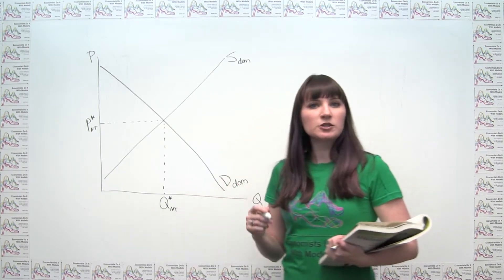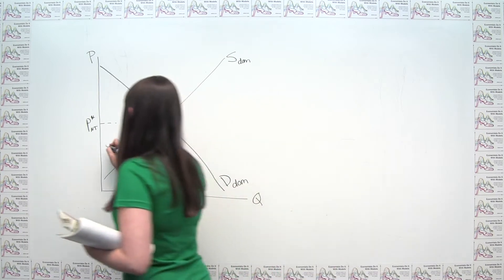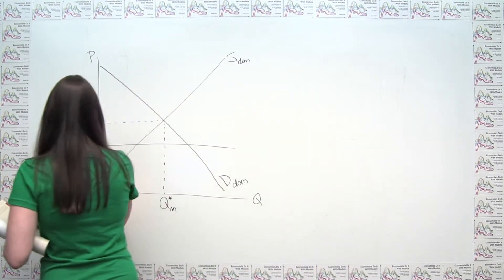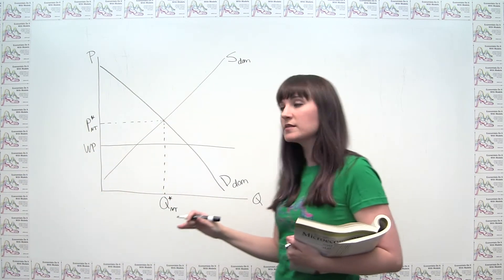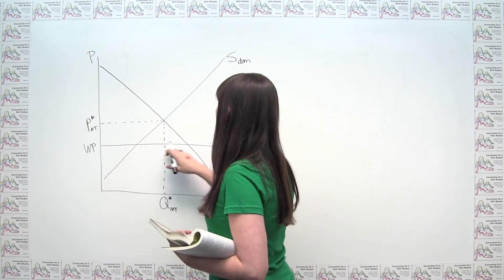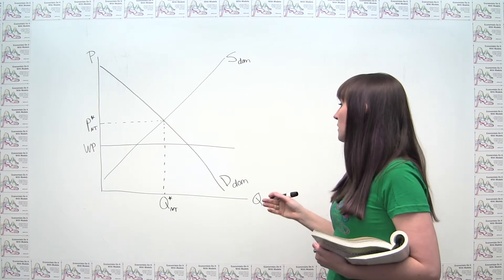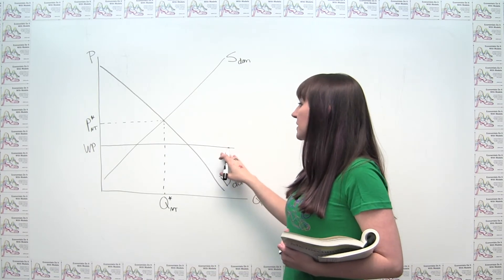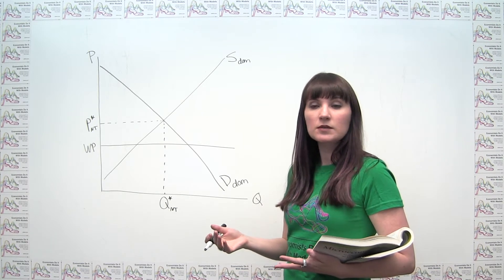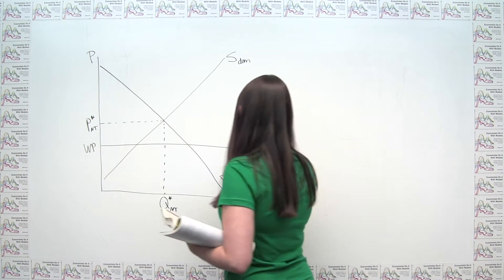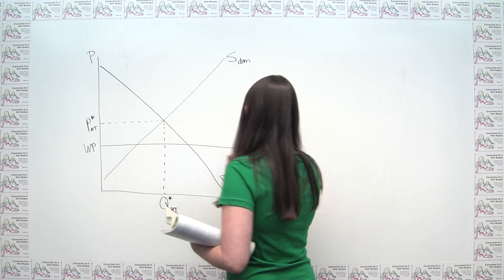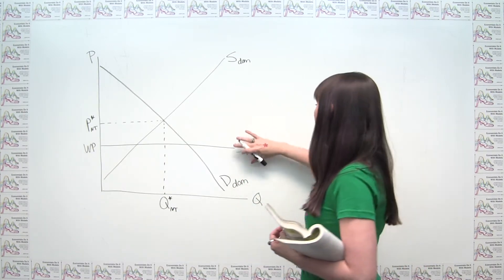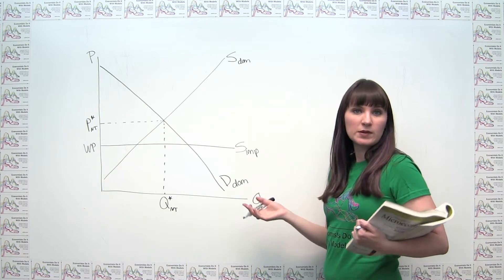When we make that small country assumption, we're just going to have a horizontal line at the world price — call this WP for world price — meaning we can buy as many oranges as we want at that world price. If we think about what this line actually represents, it represents a supply of imported goods, so I could call this S sub IMP for imports. But you can also just take the world price as given.